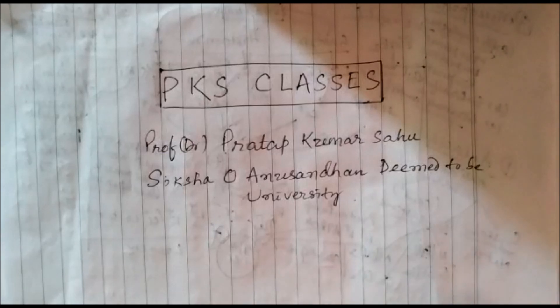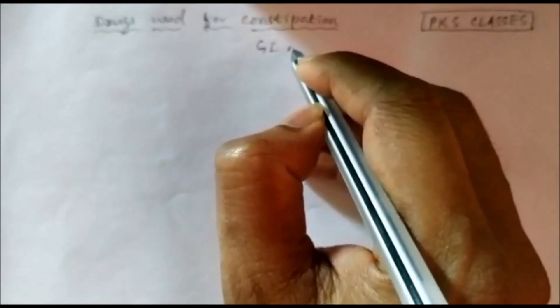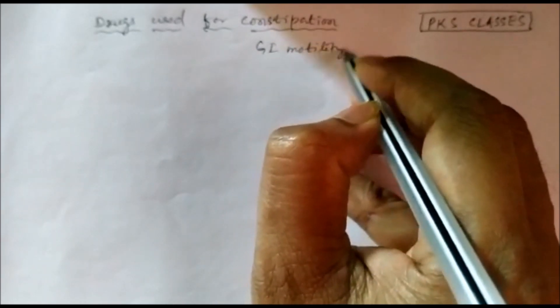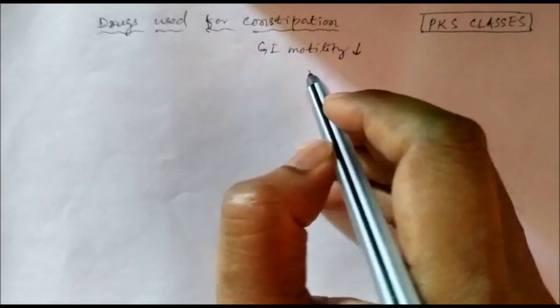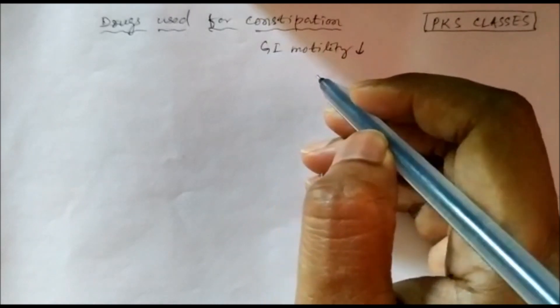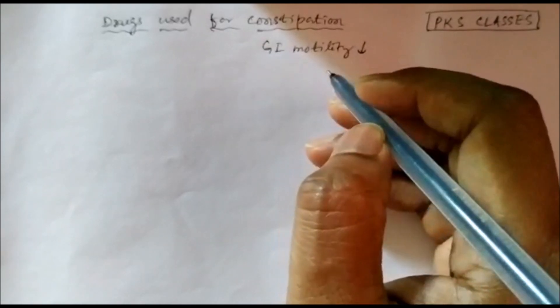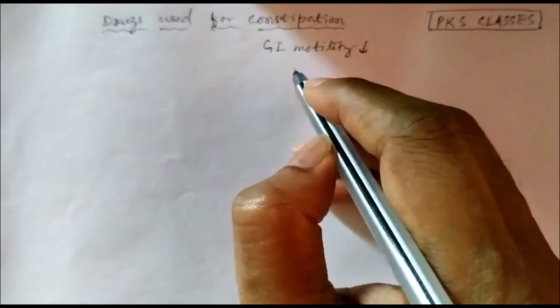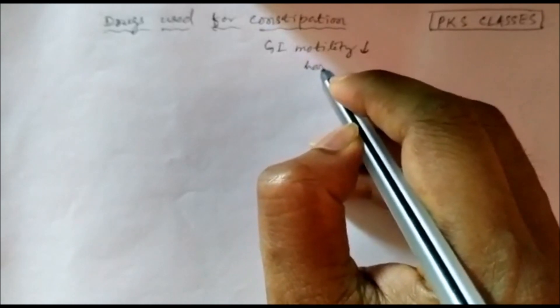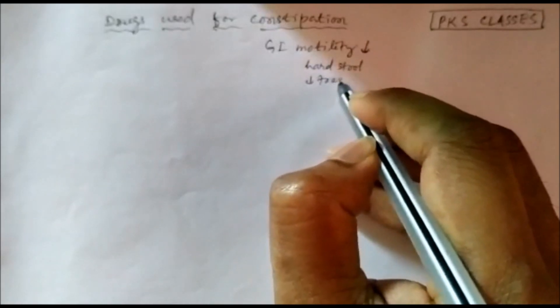Welcome to PKS Classes. Today we will study the drugs used for constipation. Constipation is a condition in which the gastrointestinal motility is decreased, so the frequency of defecation decreases — less than three times a week. Not only does the frequency decrease, there is also hard stool. That condition is called constipation.